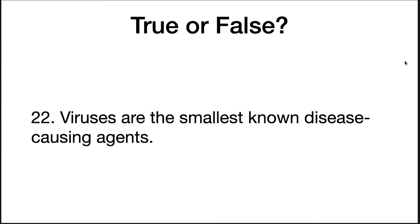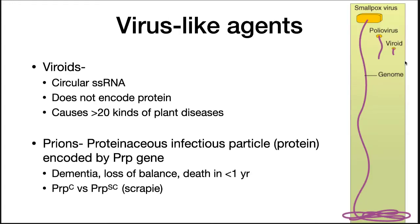True or false: viruses are the smallest known disease-causing agents. The correct answer is false. There are agents even smaller than viruses that cause disease in plants and animals. Viroids are one example. Viroids are circular, single-stranded RNA molecules that replicate inside plants.